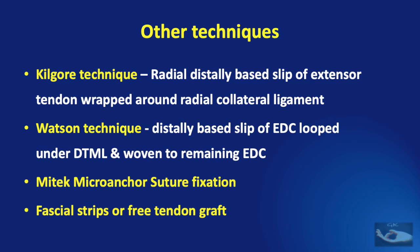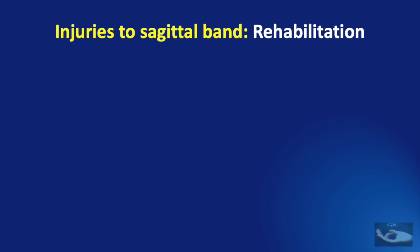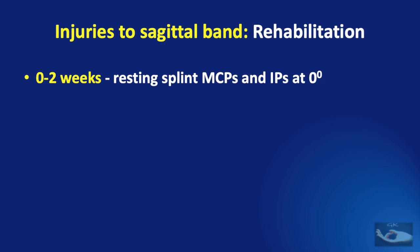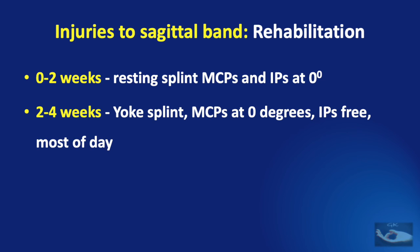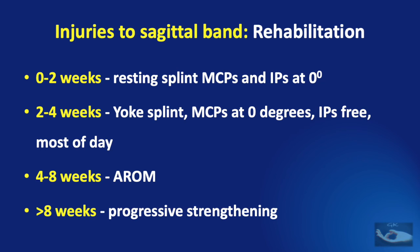As in any hand surgery reconstruction procedure, rehabilitation is very important. For the first two weeks, a resting splint keeping the metacarpophalangeal joints and interphalangeal joints at zero degrees is important. After two weeks, the splint can be removed and a yolk splint is applied keeping the metacarpophalangeal joints at zero degrees with the interphalangeal joints free; this is worn for most of the day up to four weeks. From four to eight weeks, active range of movement exercises are started at the involved metacarpophalangeal joint, using the yolk splint at night. After eight weeks, progressive strengthening exercises can be started.